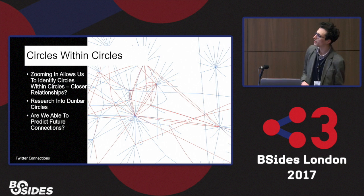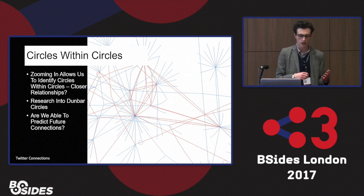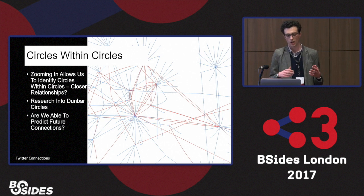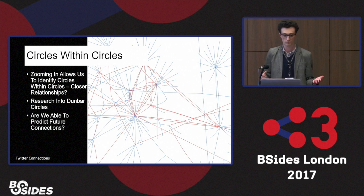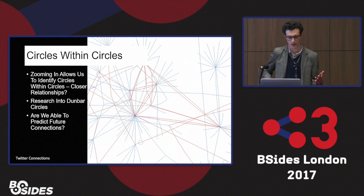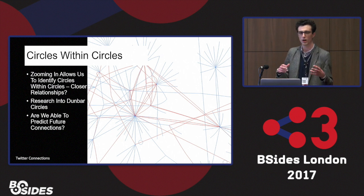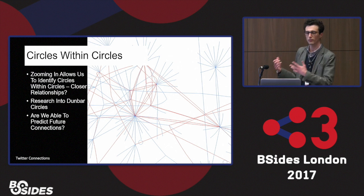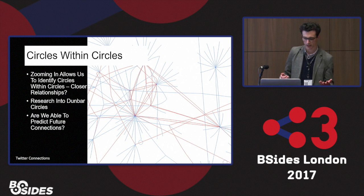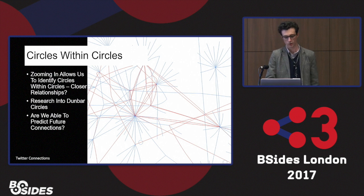If you zoom in you can see smaller circles within others. I did research outside of information security where essentially someone found that humans can only maintain around 150 human relationships — you probably have like three close friends, but being able to maintain a working relationship is around 150. So what I was thinking was: are you able to derive these connections and relationships from social media interactions without being authenticated? And are we able to predict future connections towards people by their actual interactions and who they like?